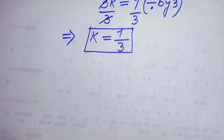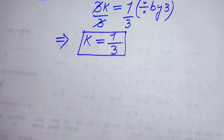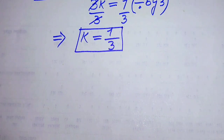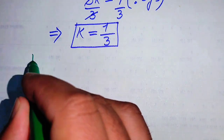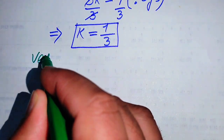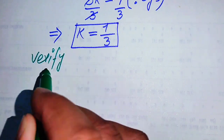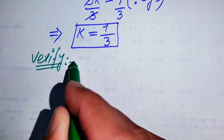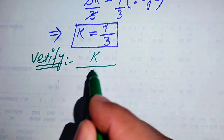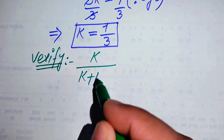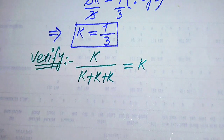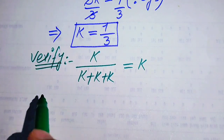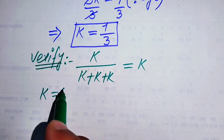In the next steps we need to verify whether these values of k are solutions or extraneous roots. We copy down the given equation: k divided by (k + k + k) equals k. On one side we verify k equals 0, and on the other side we verify k equals 1 over 3.